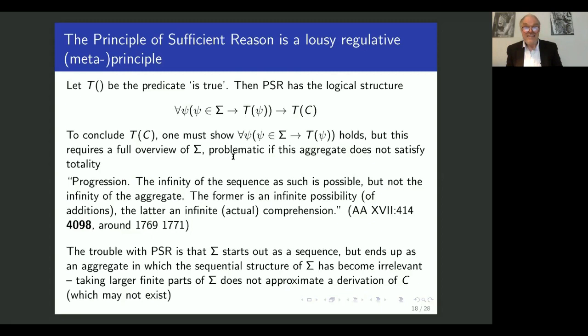Now, you may start to see what is wrong with the principle of sufficient reason. The set of consequences starts out as a sequence you generated sequentially, but it ends up as an aggregate from which to prove C and an aggregate in which the sequential structure has become irrelevant. So taking larger finite parts of sigma does not approximate the derivation of C, because the derivation may not exist.